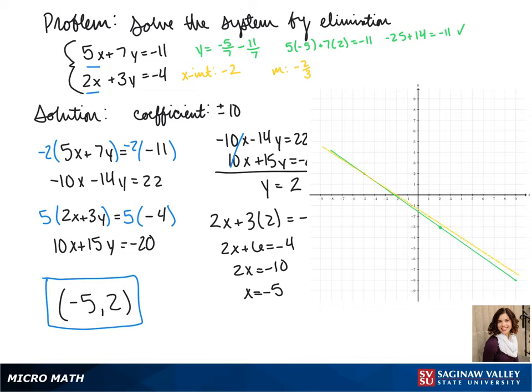We see that our lines are fairly close, but they only cross at one point, at negative 5, 2.